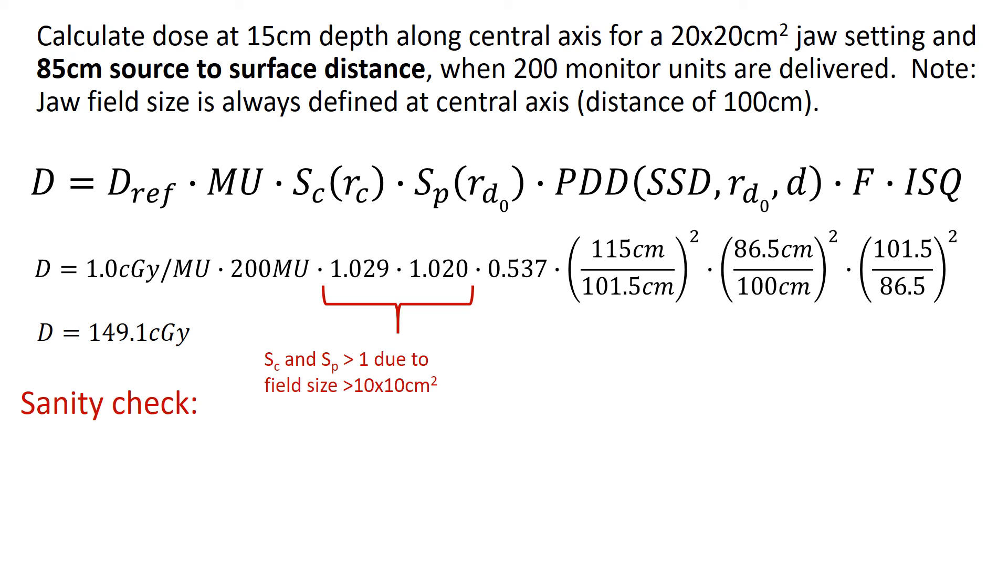For instance, we can look at our scatter factors, and we see that they're both greater than 1, which makes sense because our field size is greater than 10. Our PDD is less than 1, which makes sense because we're at a depth greater than D max.